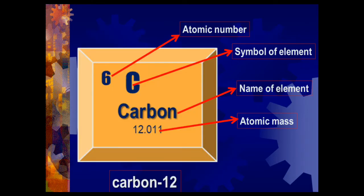Recall your memory — from the periodic table, we get information about elements. For example, carbon-12 is presented here. We can collect the following information from the periodic table: atomic number — carbon having 6; symbol of element — carbon symbol is C; name of element — carbon; and atomic mass — 12.011, using unit AMU.